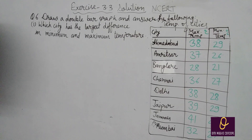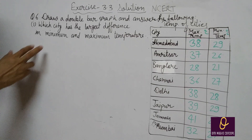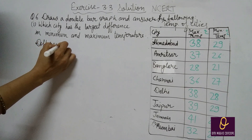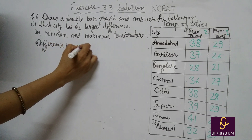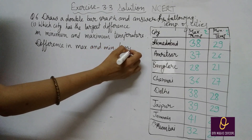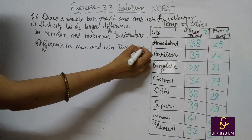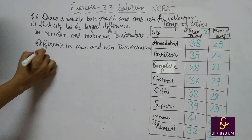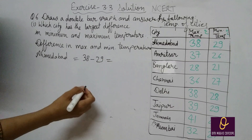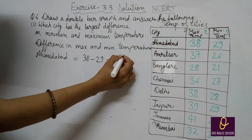First part: which city has the largest difference in minimum and maximum temperature? इसके लिए difference note करेंगे. M'abad: maximum 38 - minimum 29 = 9 degree Celsius. ऐसे सभी cities का करेंगे. सबसे ज़्यादा 15 degree Celsius difference Jammu का है.